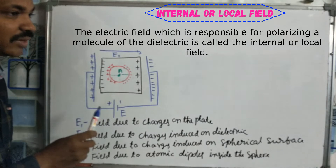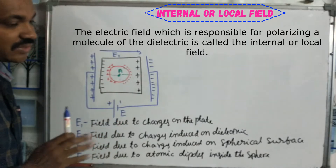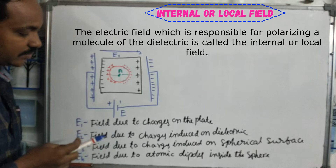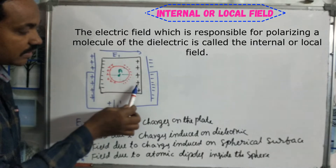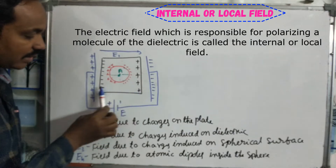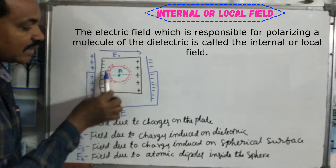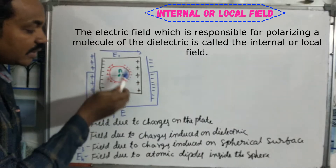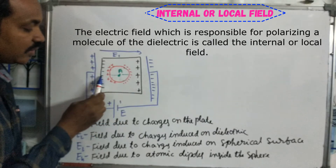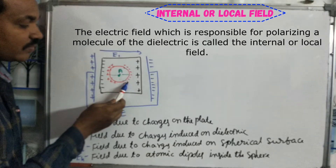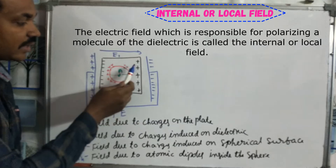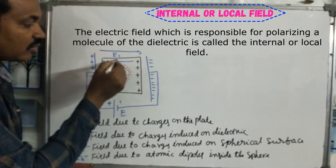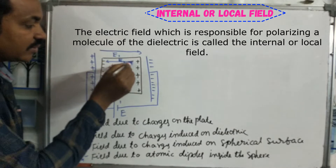In dielectrics, polarization is the charge separation. In this particular atom, we consider an imaginary sphere. Inside the imaginary sphere, charges are induced on each side. A field is created, which we call E2, due to the induced charges.